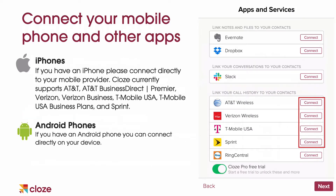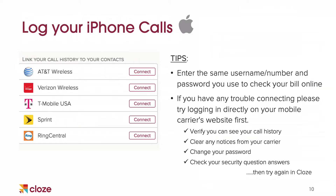As you're going through the setup flow, you can connect lots of different apps and services. For iPhone users, you're going to connect your call history to Close by connecting your mobile provider directly. Apple has a lot of great privacy controls on all of their devices, which means app developers like us can't get to your call history on your device like we can with Android. So for iPhone users, we're going to have you connect directly to your carrier — AT&T, Verizon, T-Mobile, or Sprint — and we'll pull in that call history for you automatically.